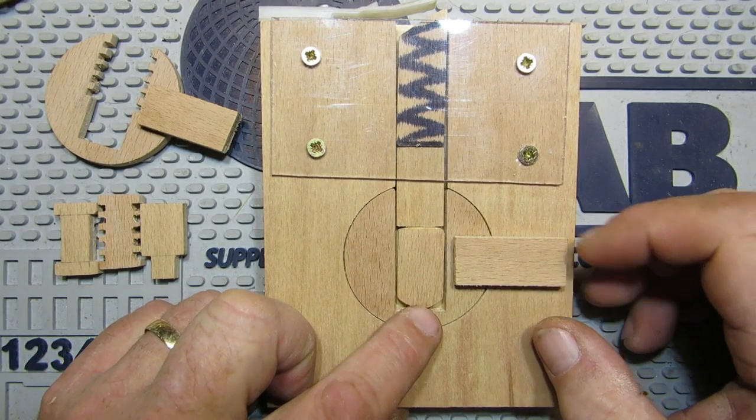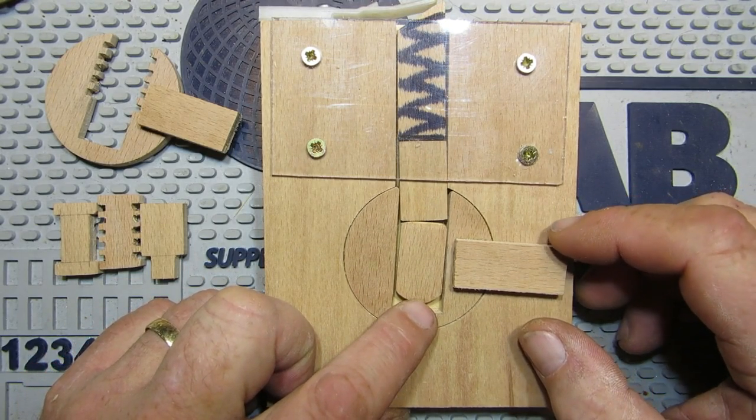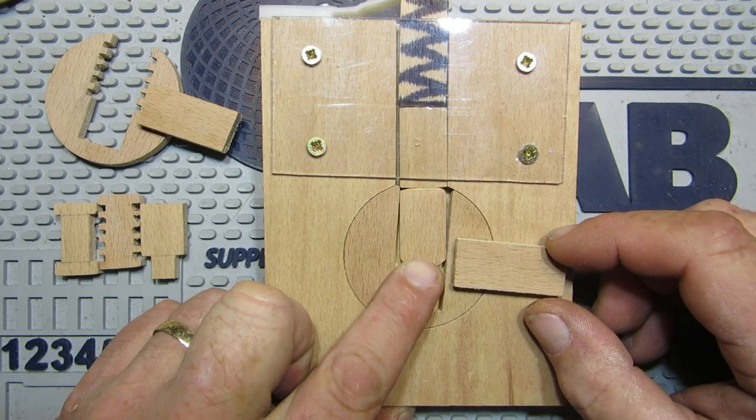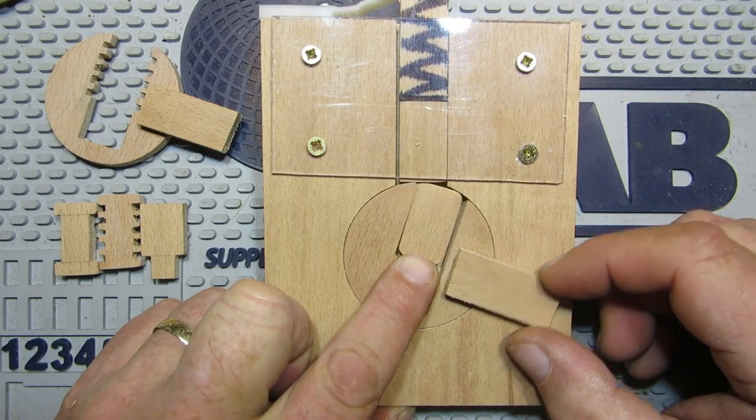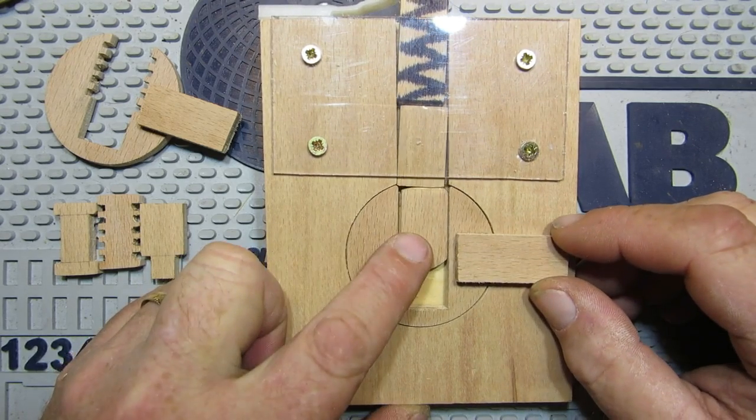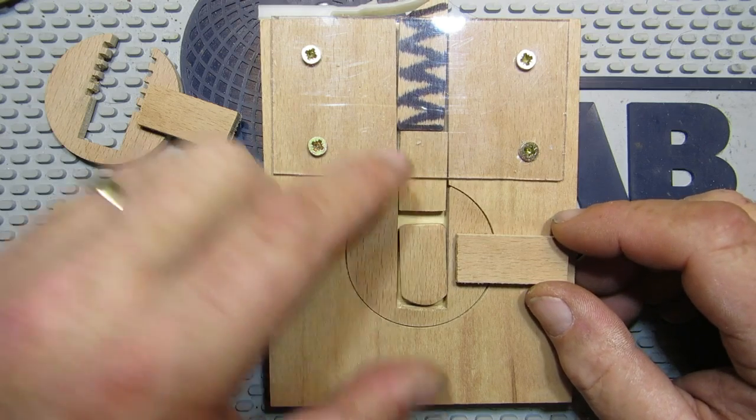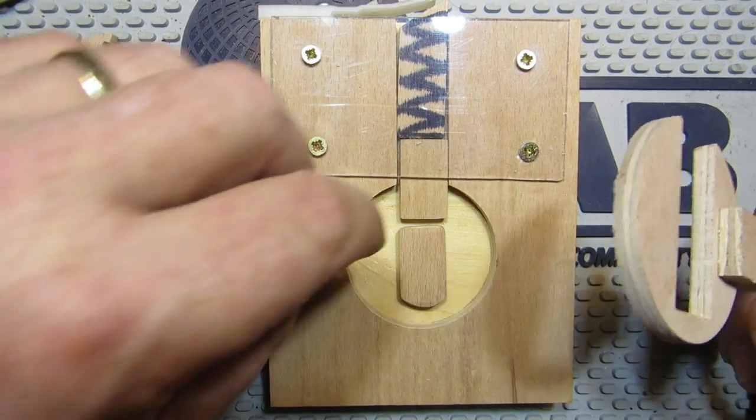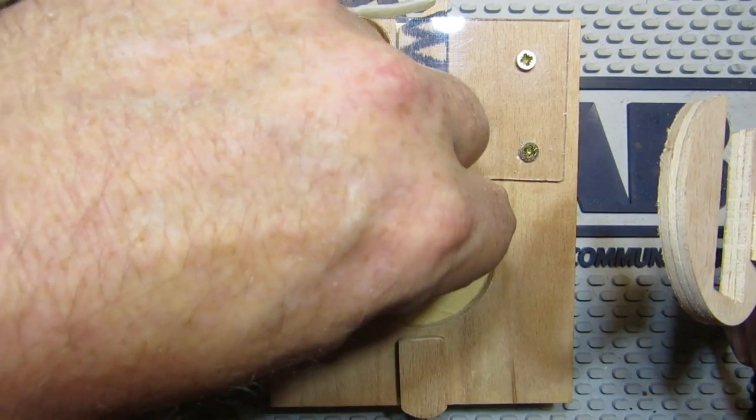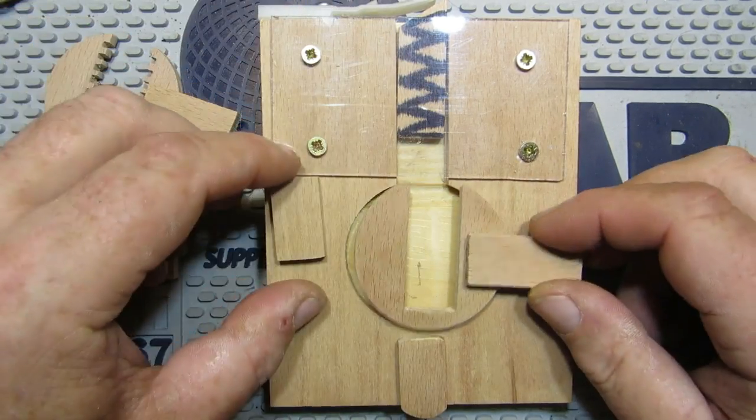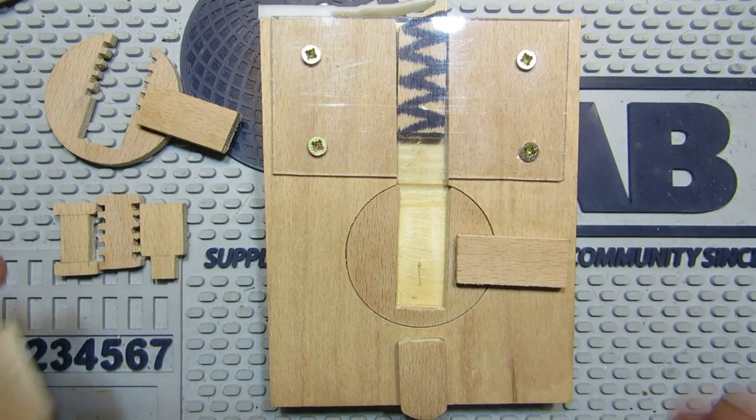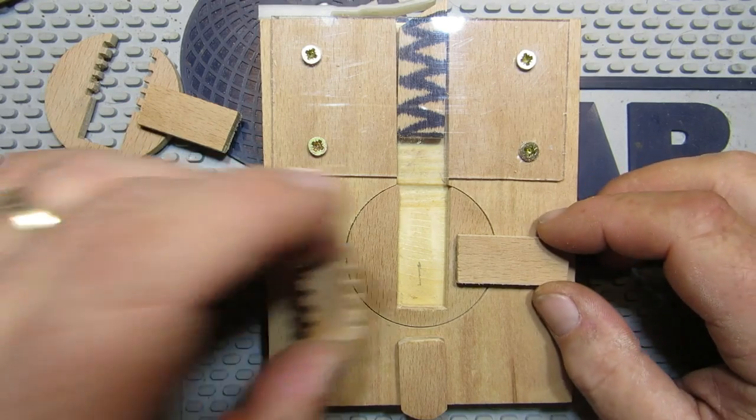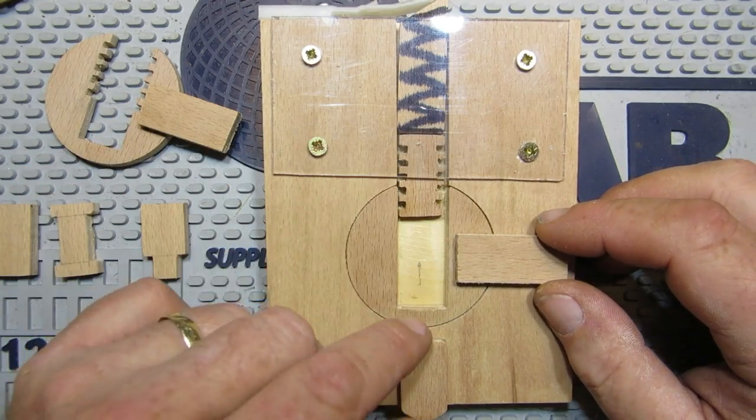So effectively the same thing when we pick it, apart from we're actually putting tension on as we're lifting the pins. And when we get to the point it'll turn. Effectively, if you've got five or six pins in there, that's what your binding order is. And depending on the tolerances in the lock depends on which ones go first.